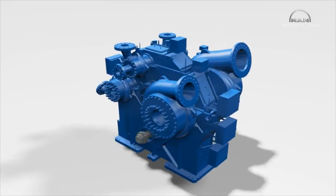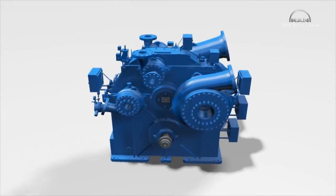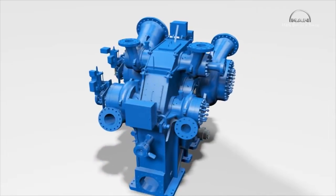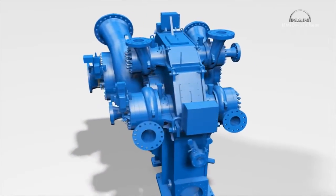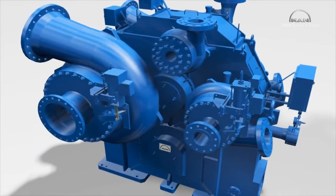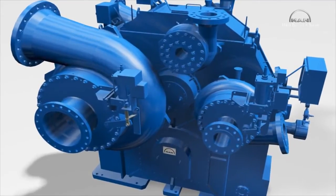This compressor has six stages, arranged in two sections. Downstream of the second stage, the customer can draw off a specific volume at medium pressure. The remainder is further compressed to the desired discharge pressure by the second section consisting of stages three to six.